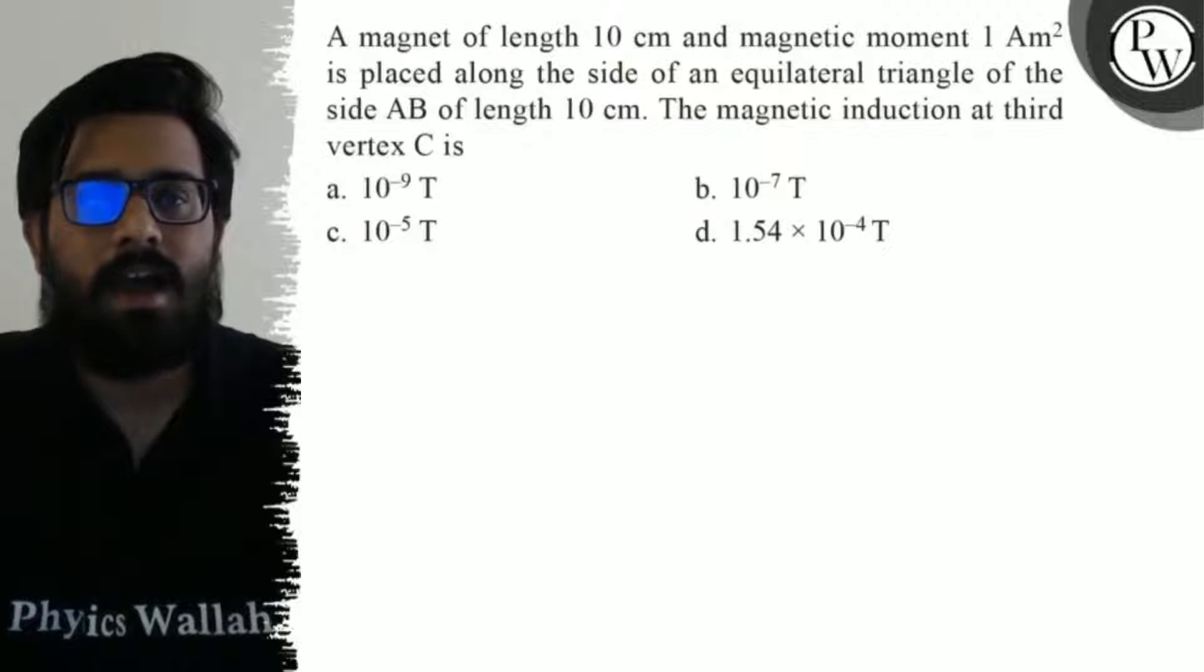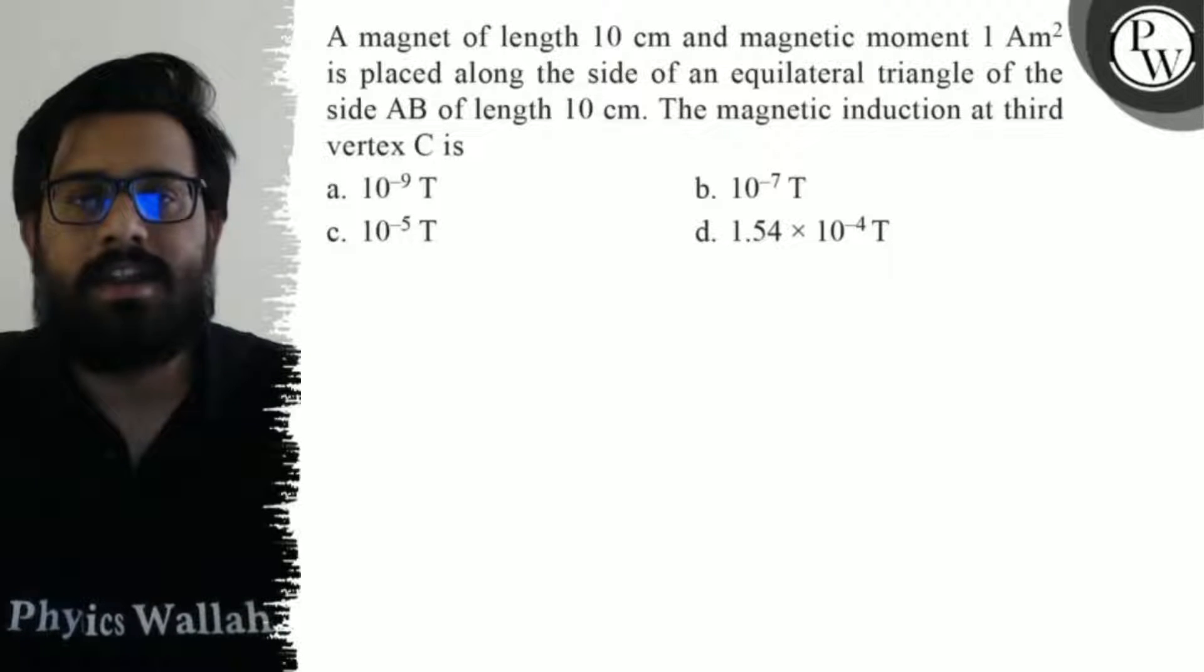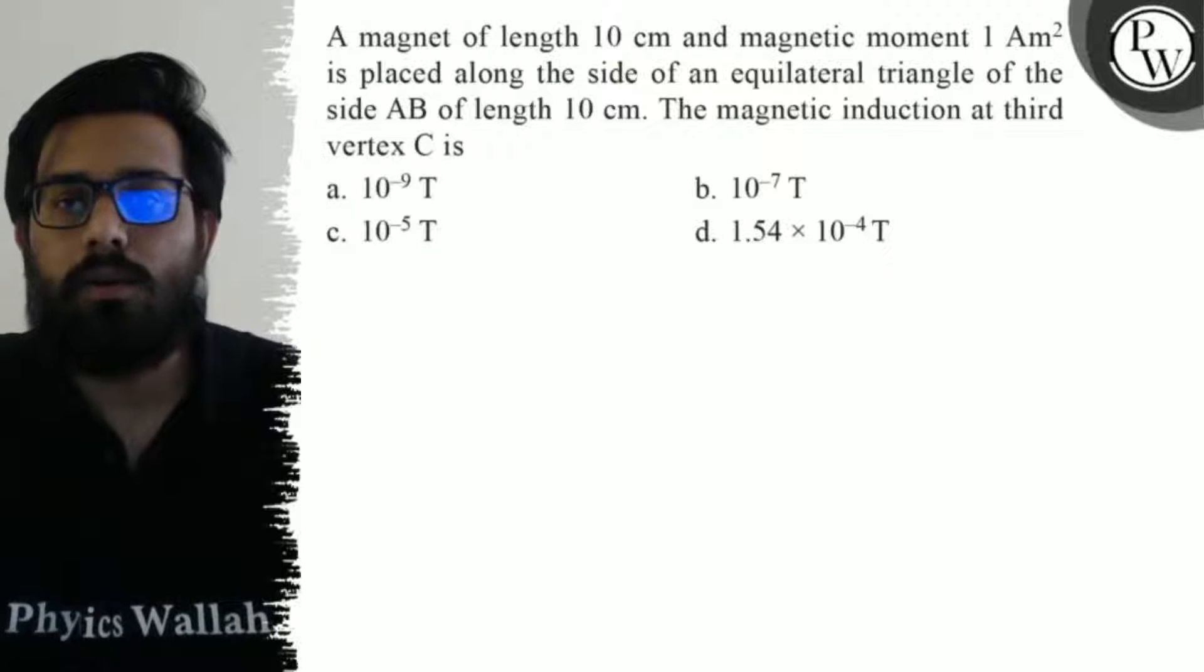Hello bachos. So let's see the question. A magnet of length 10 centimeter and magnetic moment 1 ampere meter square is placed along the side of an equilateral triangle.